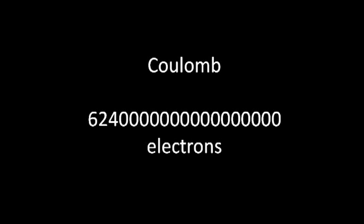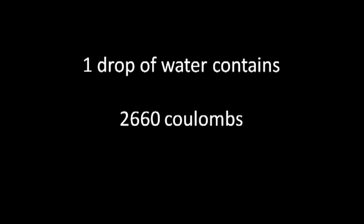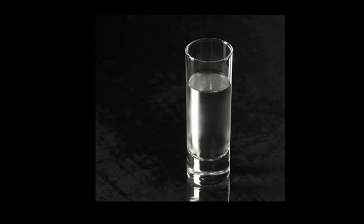Conversely, this many protons would make a coulomb of positive charge. Using the information we've already determined, we know that one drop of water contains 2,660 coulombs. Now, it's important to know that coulombs describe charge. In a glass of water, there's actually no charge, because the number of electrons in a glass of water are approximately equal to the number of protons. We talked about the fact that they like to hang out together. So really, the charge in a glass of water is zero, because the protons and the electrons cancel each other out. And that's a good thing, because you wouldn't want to get struck by lightning every time you try to take a sip of water.